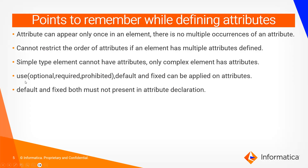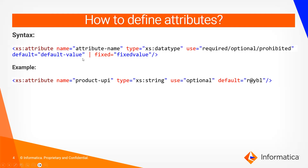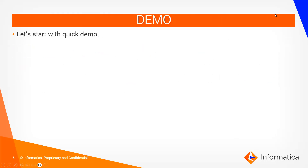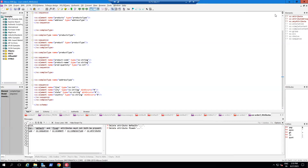A simple type element cannot have attributes — only a complex element can have attributes. The 'use' constraint values are optional, required, and prohibited. Default and fixed values can be applied to an attribute, but default and fixed must not both be present at the same time — you can use only one or the other.